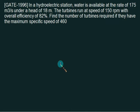One question appeared in 1996. We have given a flow rate, head is given, turbine speed is given, and you want to find out the number of turbines when the maximum speed is known to us.